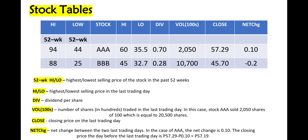For BBB, the highest selling price for the past 52 weeks is 88 and the lowest is 25. The highest selling price in the last trading day is 45 and the lowest is 32.7, with a dividend of 0.28, with a volume of 10,700. The closing price on the last trading day is 45, with a net change of negative 0.2.